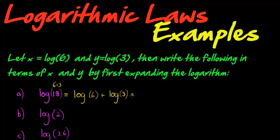I'm allowed to do that, and this can now be written in terms of x and y. This is just x plus y. So if I knew what the value of log 6 was and I knew what the value of log 3 was, to find the value of 18 I would just add these two answers that I apparently knew. So x plus y.